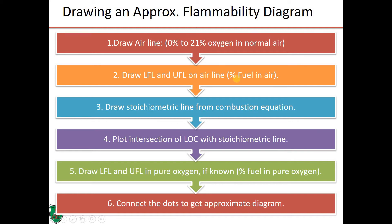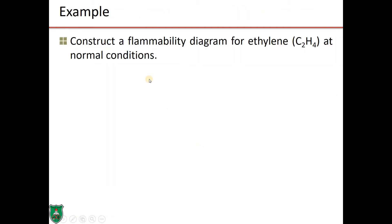That is the range of flammability of that specific compound or component. Then, draw the stoichiometric line from combustion equation. Plot the intersections of limiting oxygen concentration with the stoichiometric line. Draw the LFL and UFL in pure oxygen, if known. And then, connect the dots to get approximate diagram. To illustrate this, let us solve the following example, which is dealing with construction of flammability diagram for ethylene C2H4 at normal conditions.